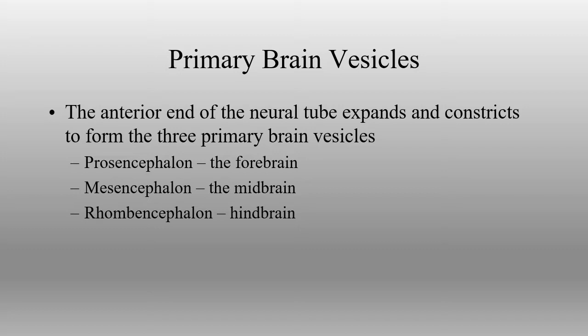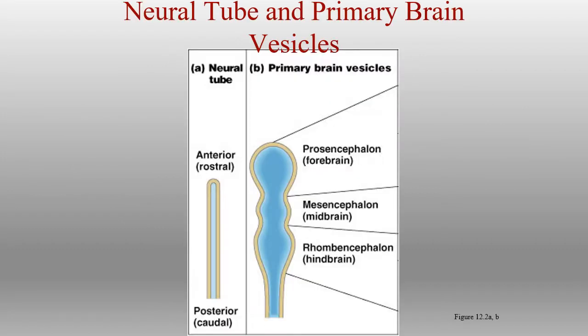We start out with what we call primary brain vesicles. These primary brain vesicles are the prosencephalon, the mesencephalon, and the rhombencephalon — each one being the forebrain, the midbrain, and the hindbrain, depending upon who you're reading. Those are going to be the first outpouchings of the neural tube.